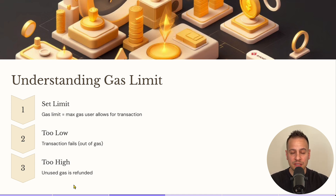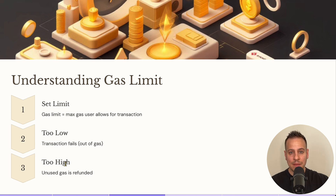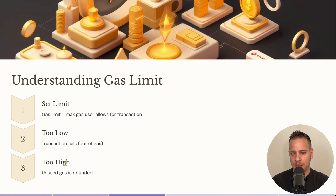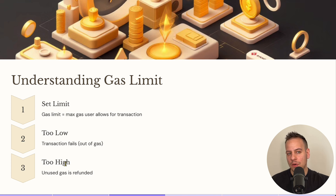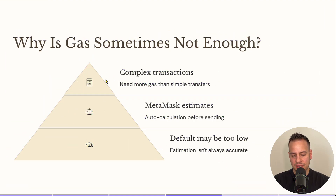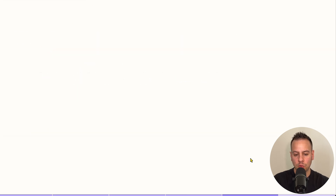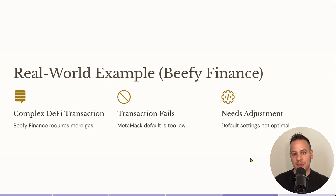Sometimes wallets estimate the gas limit incorrectly and set it too low. In other cases, the blockchain state changes between when the simulation was done and when the transaction actually reaches the validators — meaning more operations are now required. A classic example is concentrated liquidity: prices change, people add or remove liquidity, and suddenly more operations are needed to complete your transaction. So to summarize: complex transactions, faulty estimations, and changed blockchain state can all cause the default gas limit to be too low.